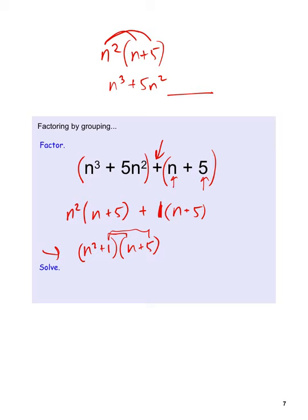When solving, we run into the same issue as before. Setting n squared plus 1 equal to 0 gives n squared equals negative 1. Taking the square root gives plus or minus i times root 1, which is two imaginary solutions. Setting n plus 5 equal to 0 gives n equals negative 5.